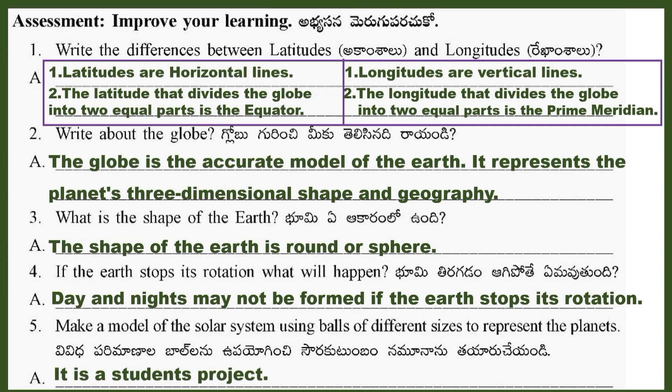Question 5: Make a model of the solar system using balls of different sizes to represent the planets. It is a student's project.